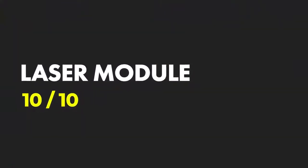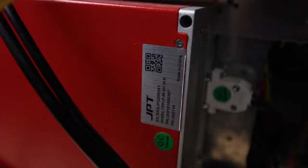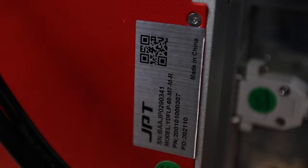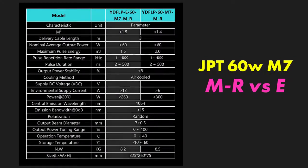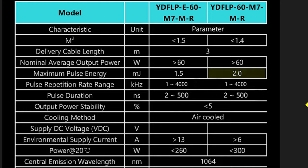One of the absolute best things about this unit is the source itself. Many people don't know this, but there are actually two models of the JPT 60W M7. You have the full power 60M7M-R, and the lower powered budget version, the E60M7M-R. The stats are nearly identical, but there is one key difference, the pulse output power. The full power model comes in at a whopping 2mJ pulse power, where the budget E version sits at 1.5mJ per pulse.